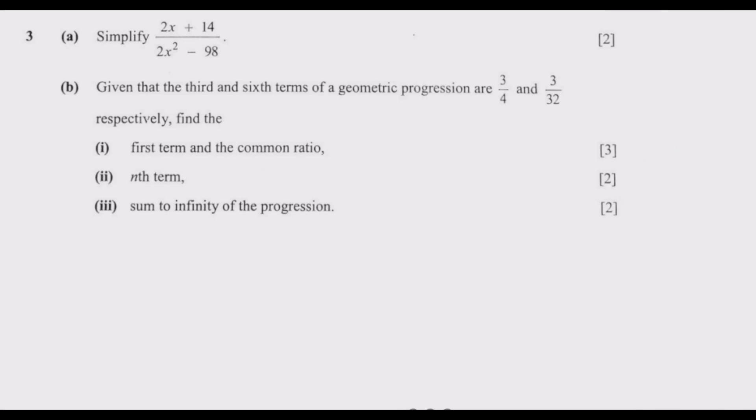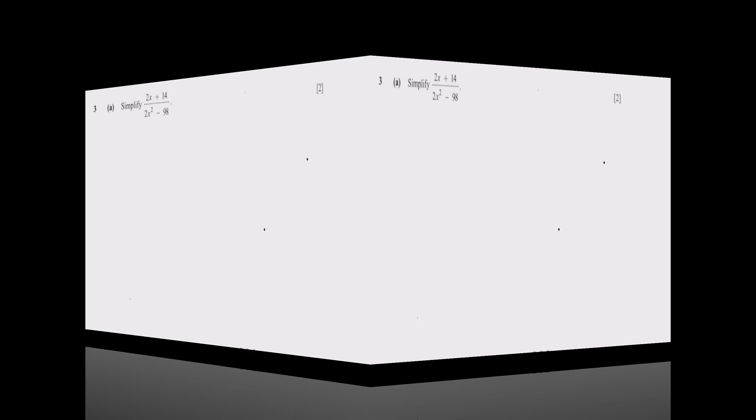Question 3a: simplify (2x + 14) over (2x² - 98). When you look at question a, the question requires us to simplify. When the question says simplify, it means make it simple — express something in a simpler way. Words like simplify, evaluate, and complete mean the same thing. So by simplifying we want to make the expression much more simple.